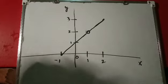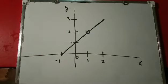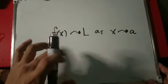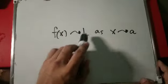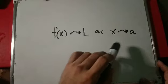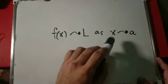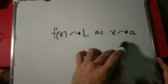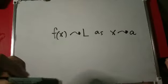Instead of just saying a limit equals some value because it looked like it was going to, we can have a more formal definition. Let's start with the general idea stated in English first: f of x gets close to some limit as x gets close to some value. We call the limit L and the value that x gets close to, a. So f of x gets close to L as x gets close to a. Now what is the mathematical way of saying 'close'?